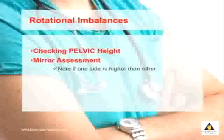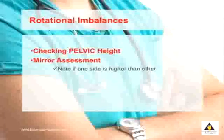The first test is very simple. All you're doing is looking at your pelvic height. Look in a mirror and note if one side of your pelvis is higher than the other. There are two landmarks you can use: the first is the ASIS, which are the bumps on the front of your pelvis, or alternately you can just place your hands on top of your hips.